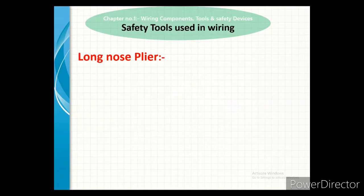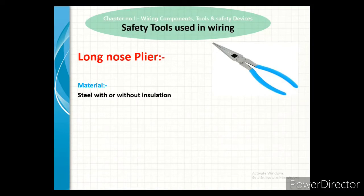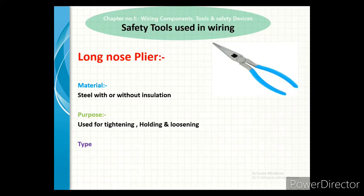Our next safety tool is the long nose plier. The material is steel, with or without insulation. Its purpose is used for tightening, folding, and loosening objects.